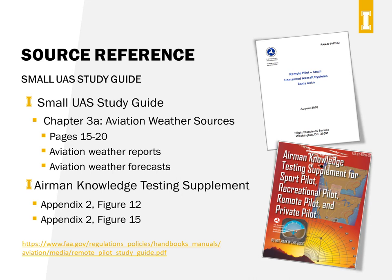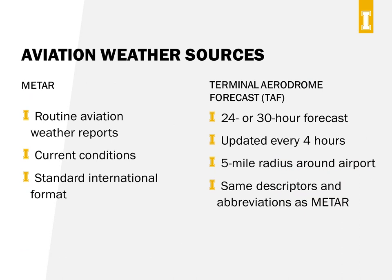We're going to hit the highlights you need to know for your exam, but this is a big topic. There are two main kinds of aviation reports you need to be aware of for the Part 107 test. METAR reports are routine aviation reports that give the current conditions at an airport or weather station in a standard international code format. Terminal Aerodrome Forecasts, or TAFs, are forecasts of the weather, giving either a 24- or 30-hour forecast, updated every four hours to cover a five-mile radius around an airport. TAFs use most of the same codes as METAR reports, but have some of their own codes related to forecasting.